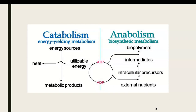Here is a schematic that puts them together. On the left-hand side, catabolism takes in energy sources. As we flow down the page, you extract utilizable energy and store it as ATP. Some energy is lost in the form of heat — no energy transformation is 100% efficient. You also end up with metabolic products, the smaller subunits left over, which can be used for other processes. On the other side is anabolism — starting from the bottom, taking external nutrients and metabolic products, using intracellular precursors, and building up large molecules called biopolymers.